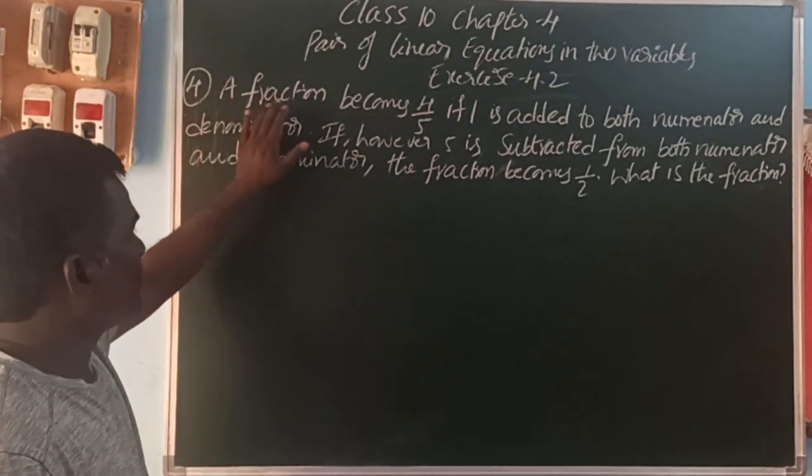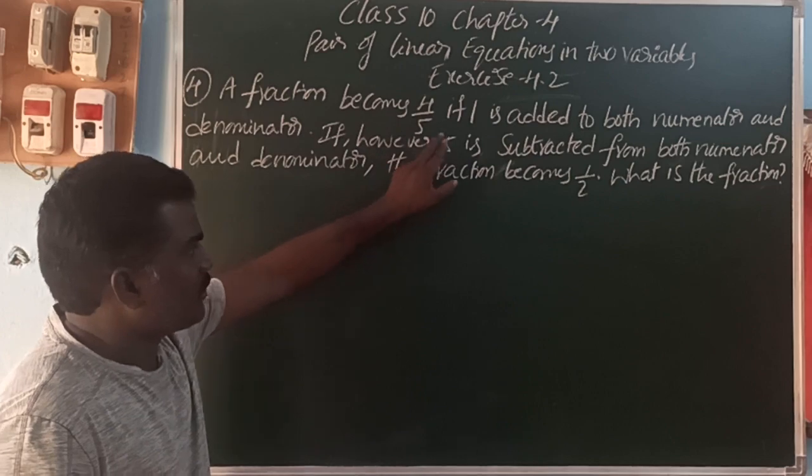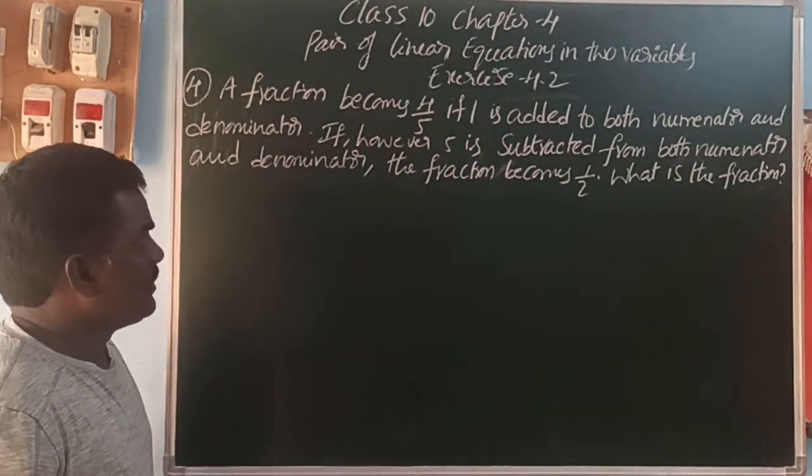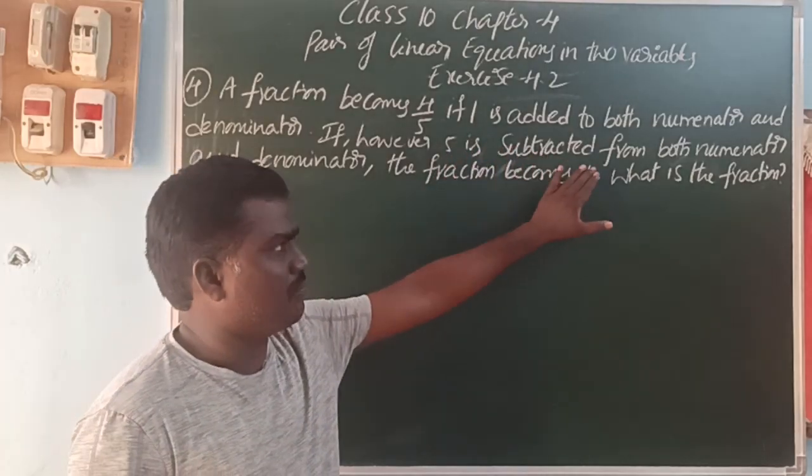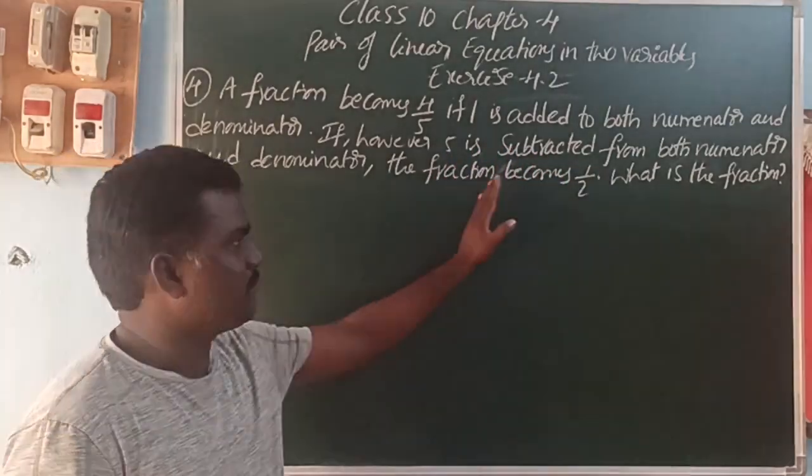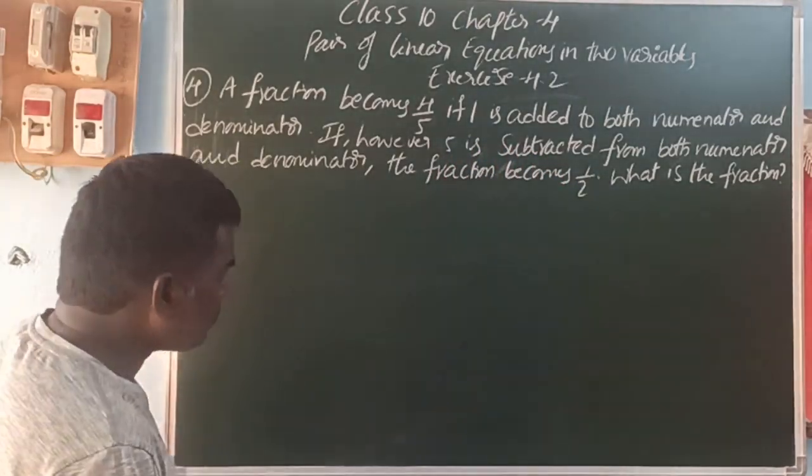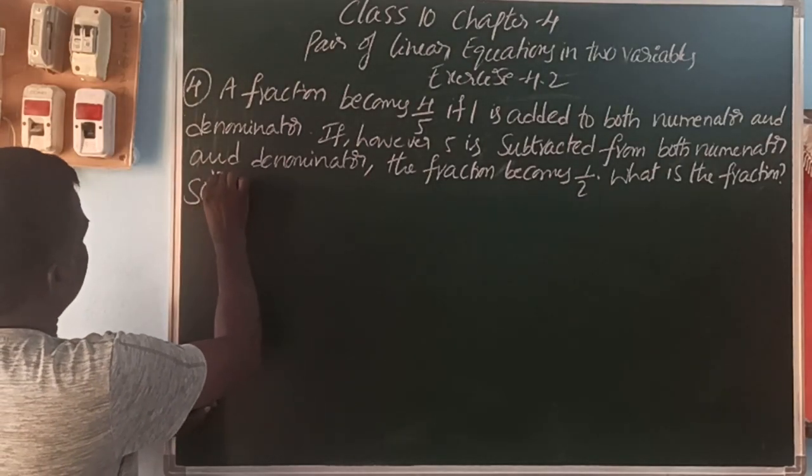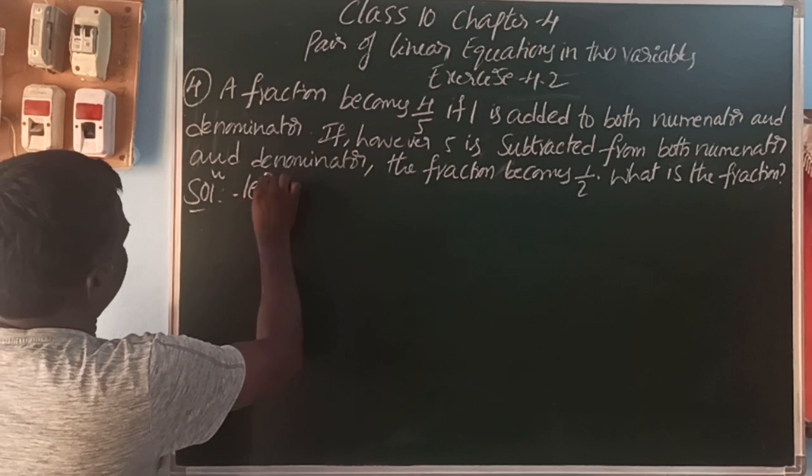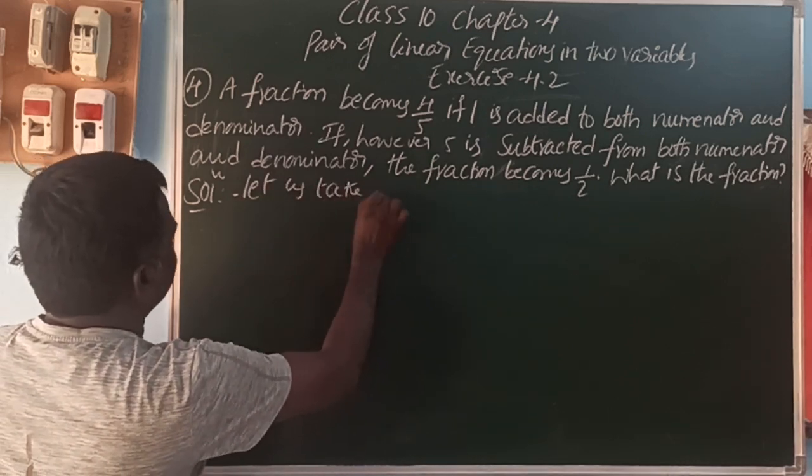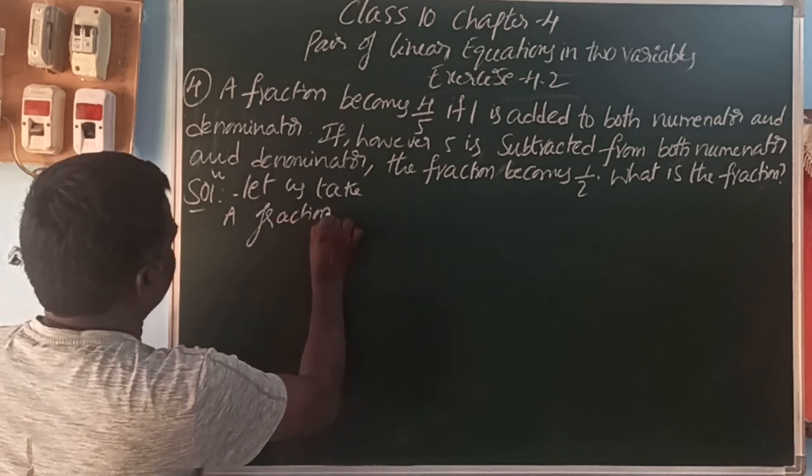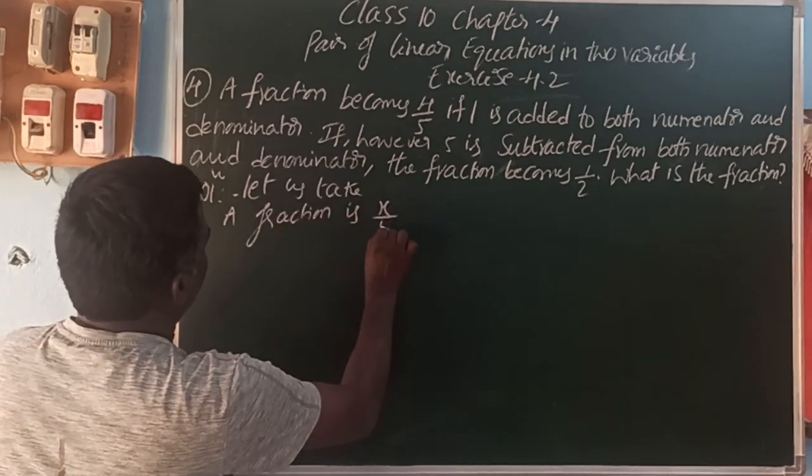So look here, exam 4. A fraction becomes 4 by 5 if 1 is added to both numerator and denominator. If however, 5 is subtracted from both numerator and denominator, the fraction becomes 1 by 2. What is the fraction? So here, let us take a fraction as x by y.